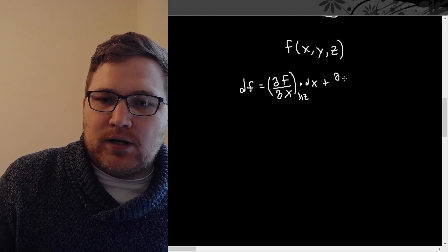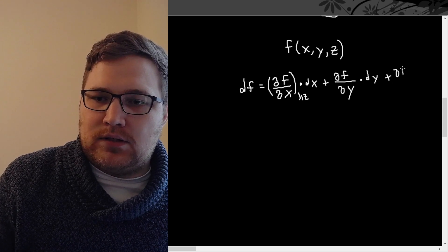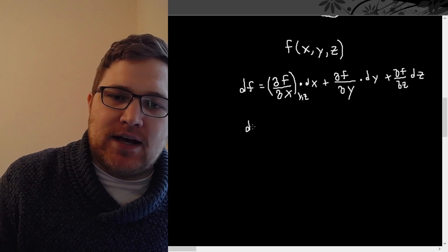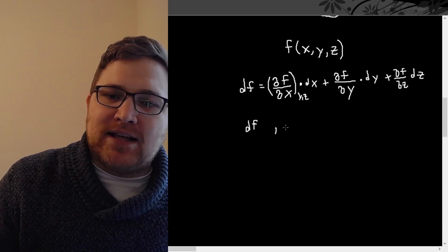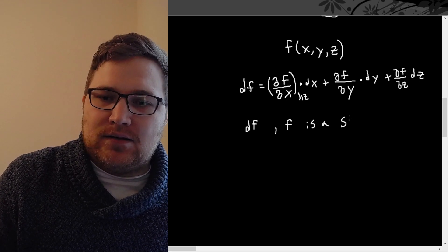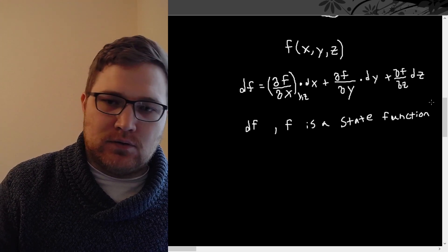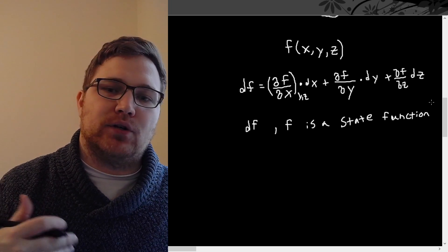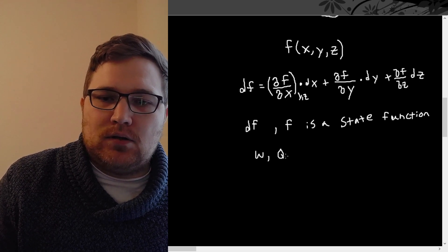We also have del f/del y times dy plus del f/del z times dz. Now, let's clarify something fundamental: these expressions df are known as exact differentials. If we can express something's exact differential like df, that means f is a state function — it is a variable that only depends on the current equilibrium state. It doesn't matter how we got to that equilibrium configuration; f only depends on the equilibrium configuration itself. Things like work and heat cannot be expressed as exact differentials.